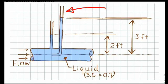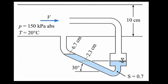This is called a stagnation tube or a pitot tube. This is called a piezometer, and whenever I see a stagnation tube and a piezometer, I think immediately of measuring pressure and measuring velocity.